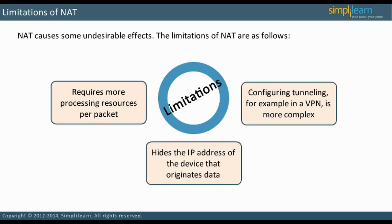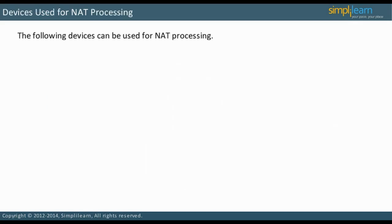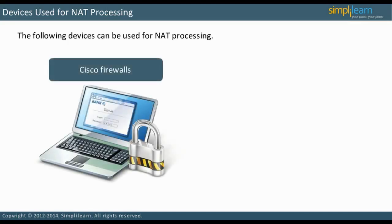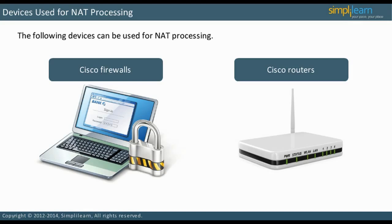Let us discuss the devices used for NAT processing. Cisco offers a line of firewalls called adaptive security appliances, and NAT can be performed on these appliances. Cisco routers can also perform NAT. Normally, the device that performs NAT is directly connected to the Internet Service Provider, ISP.